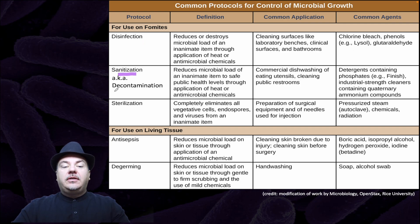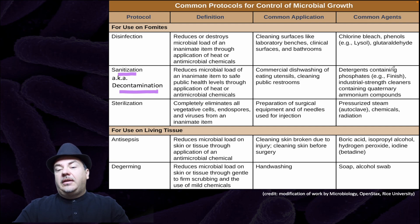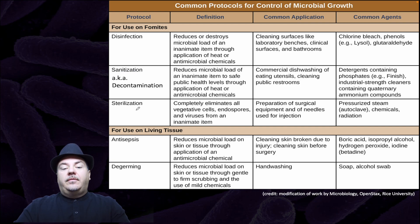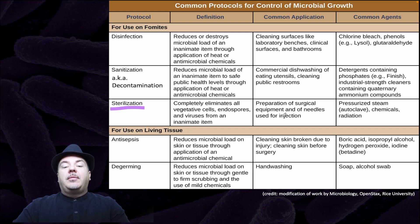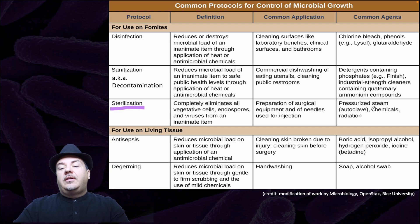Next, we have sanitation, also called decontamination. This reduces microbial load of an inanimate item to safe public health levels through application of heat or antimicrobial chemicals. Common applications include commercial dishwashing of eating utensils and cleaning of public restrooms. Common agents are detergents containing phosphates and industrial-strength cleaners containing quaternary ammonium compounds. Finally, for inanimate surfaces, we have sterilization, which completely eliminates all vegetative cells, endospores, and viruses from an inanimate item. Common applications include preparation of surgical equipment and needles used for injection. Common agents include pressurized steam using a device called an autoclave, chemicals, and radiation.